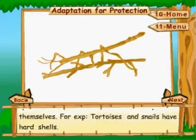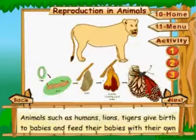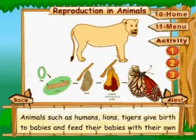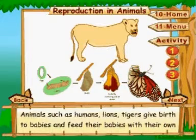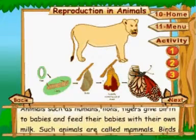Some animals have spines or shells on their bodies to protect themselves. For example, tortoises and snails have hard shells.